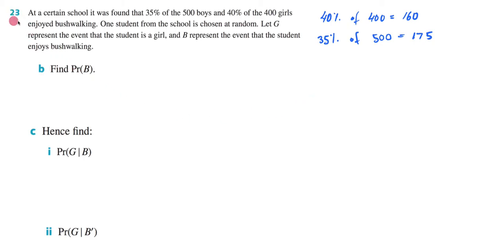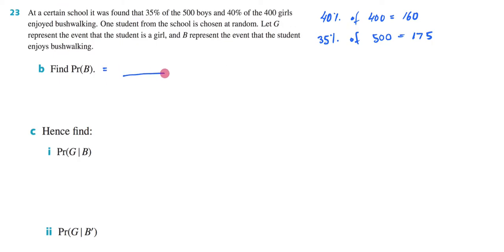We're still doing question 23 of exercise 9F. Part B is asking us to find the probability of randomly selecting a student who enjoys bushwalking. The very first thing we need to do is determine what our possible outcomes are — in other words, what our denominator is, what our sample space is going to be.